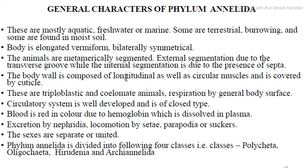Internal septa are also present. The body wall is composed of two types of muscles: circular and longitudinal. There are three classes: Polychaeta, Oligochaeta, Hirudinaria, and Annelida — these classes are presented.